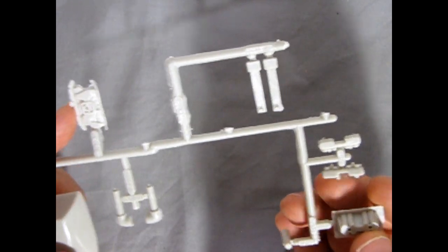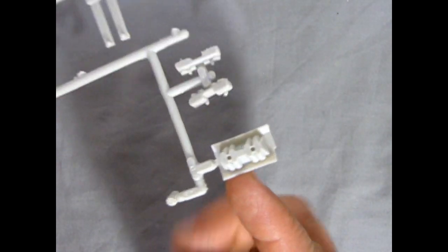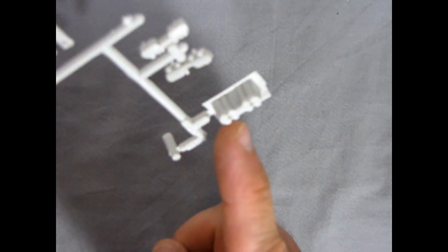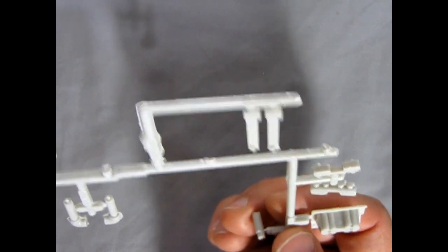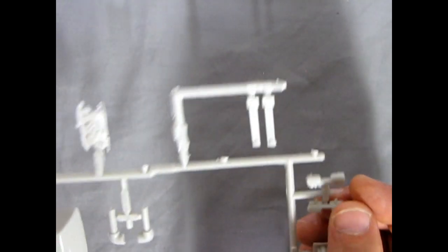There's our intake manifold for the hemi and our big high-rise manifold. One thing that is nice is they do have the bolts on the side just like it would be, but a lot of the stuff is quite simplified and very basic. So what can you do?